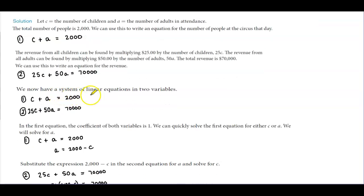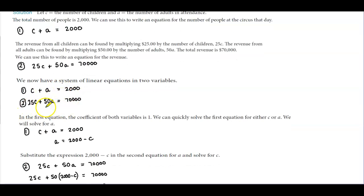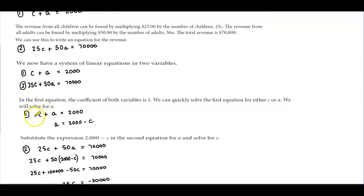Now we have a system of linear equations in two variables. There's our first equation and there is our second equation. We're going to solve our system to find C and A.